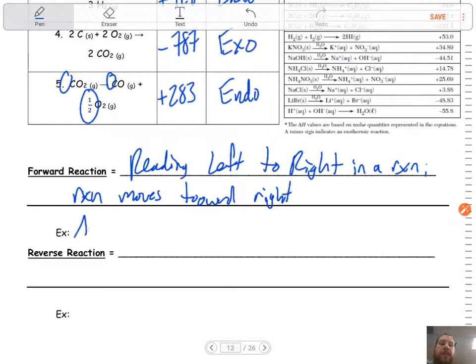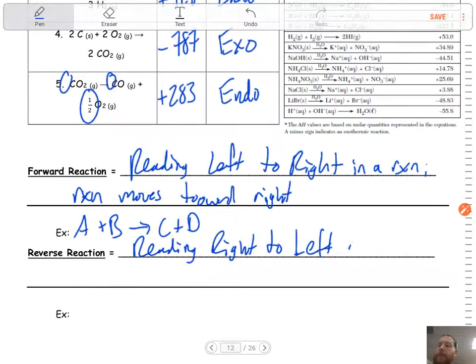The reverse reaction, though, is the opposite. We're reading right to left in a reaction. So the reaction moves toward the left. So if we wrote it, same reaction, it's the reverse of that, so our arrow would be flipped.